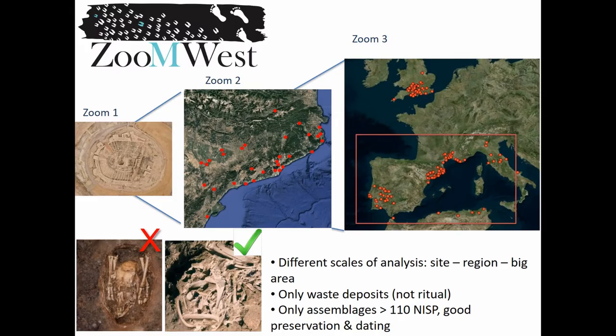We are working at different levels — at the level of the site, then regional perspectives, and then macro-regional to see how different regions compare to others. We are only taking waste deposits, non-ritual assemblages, because ritual deposits could reflect different practices. We are taking only assemblages that have a certain number of remains, good preservation, and reliable context, to guarantee that the data we have are relevant.